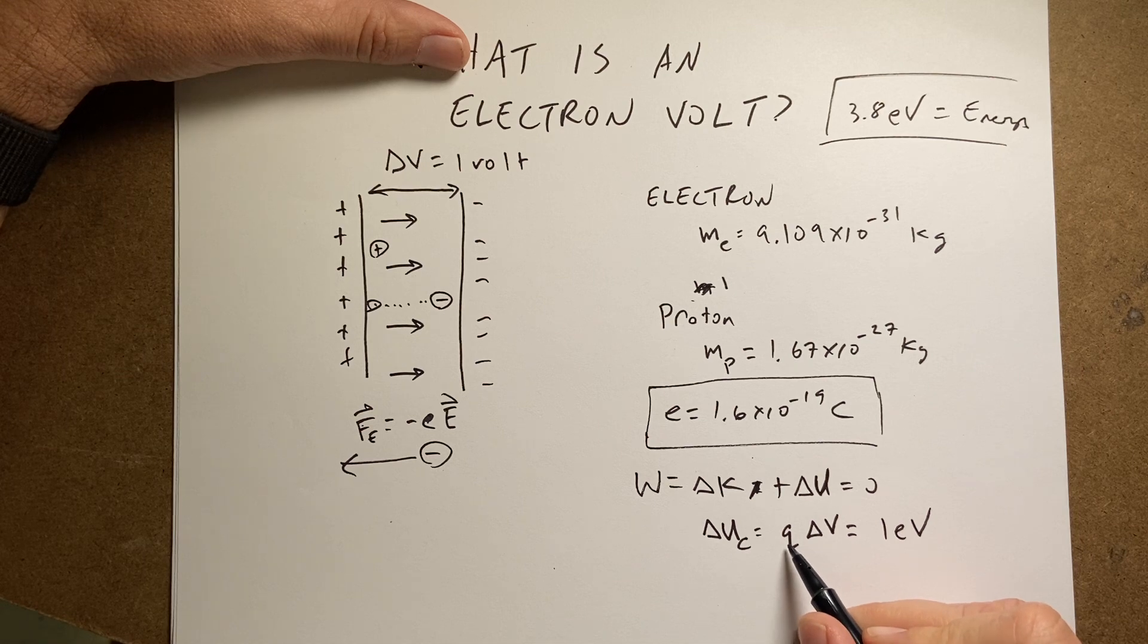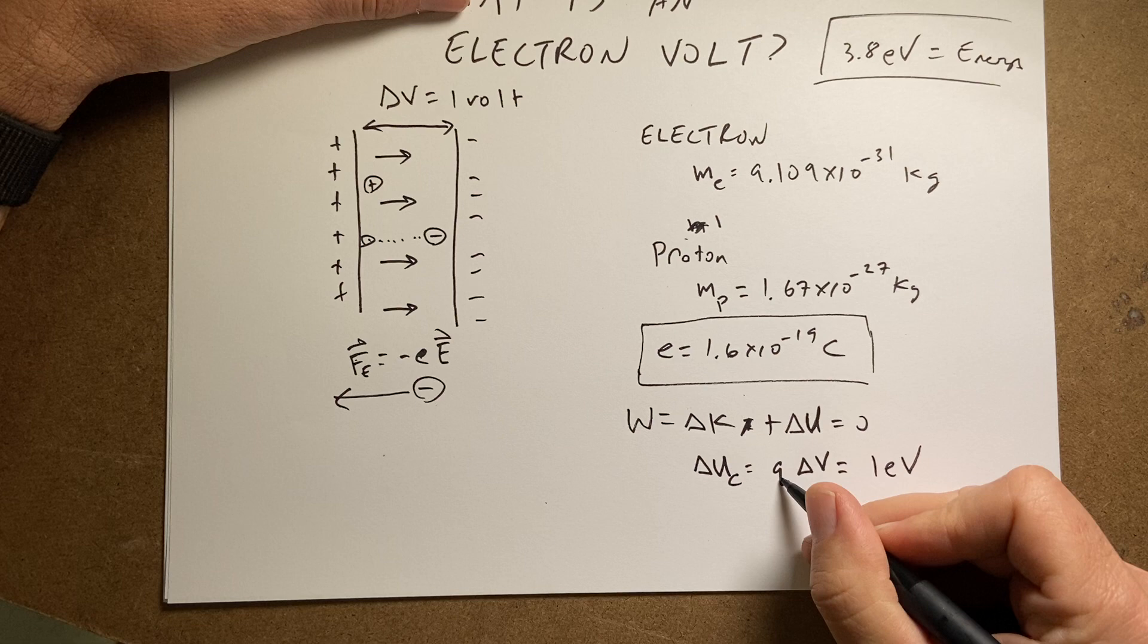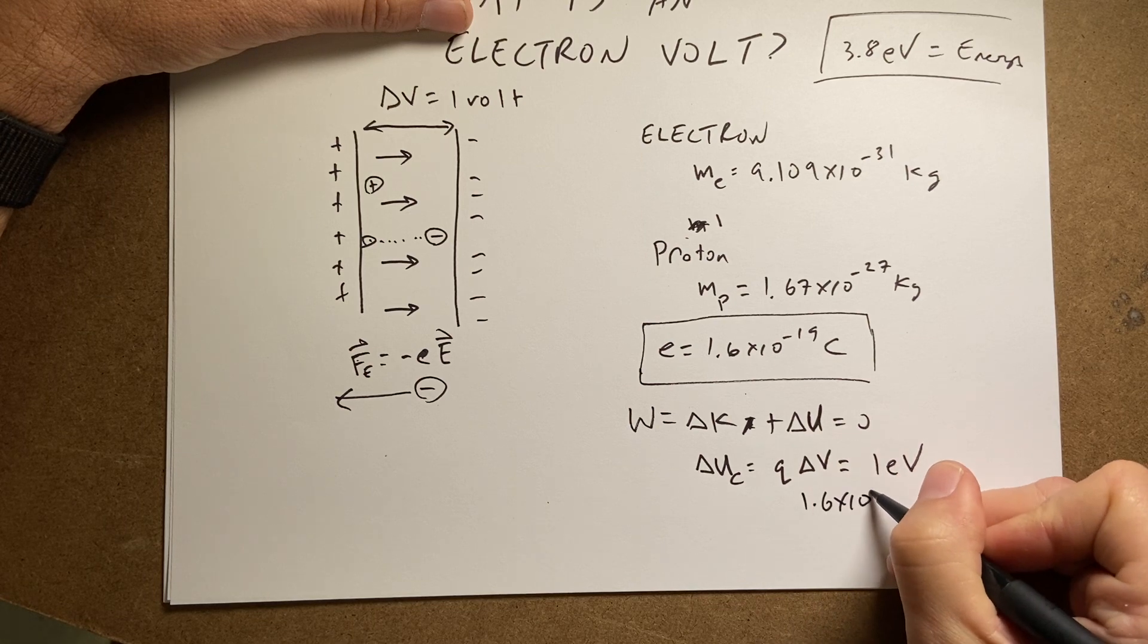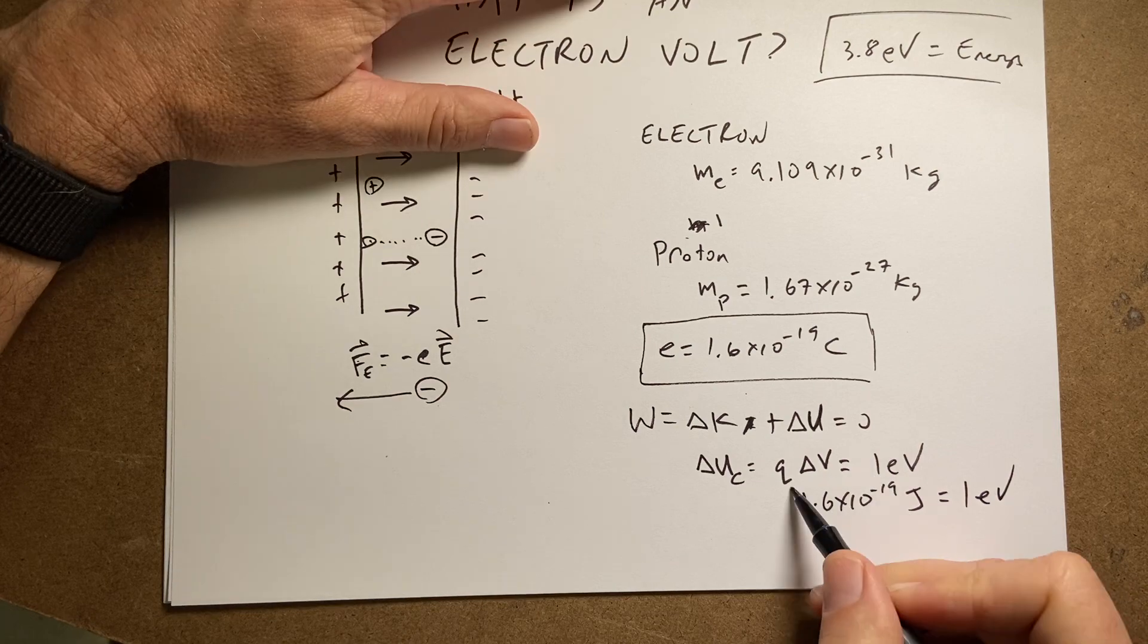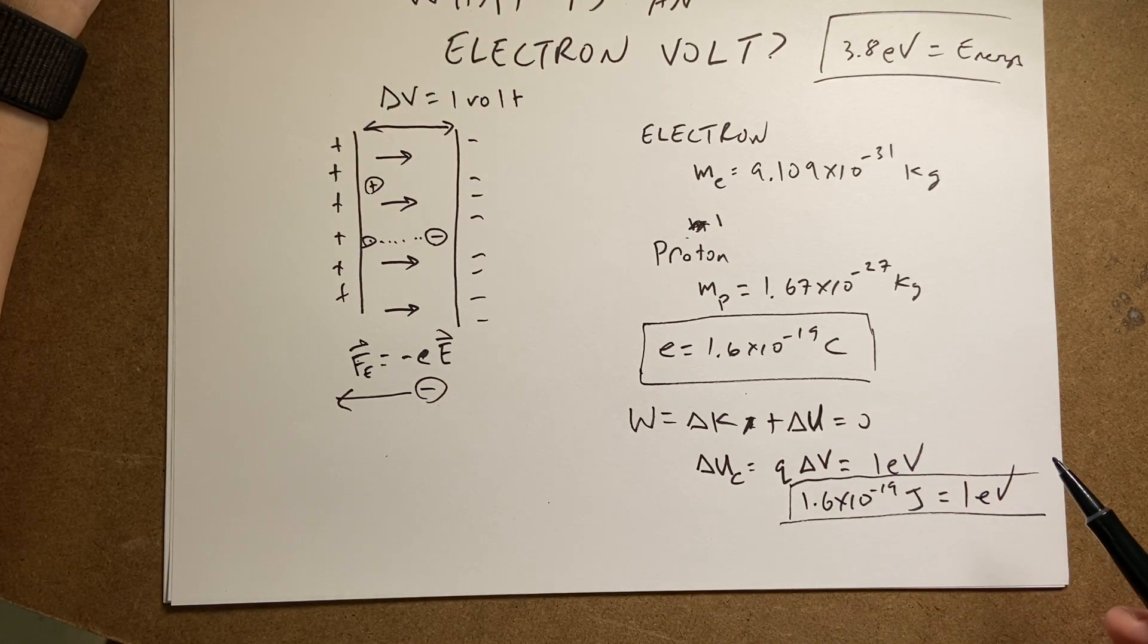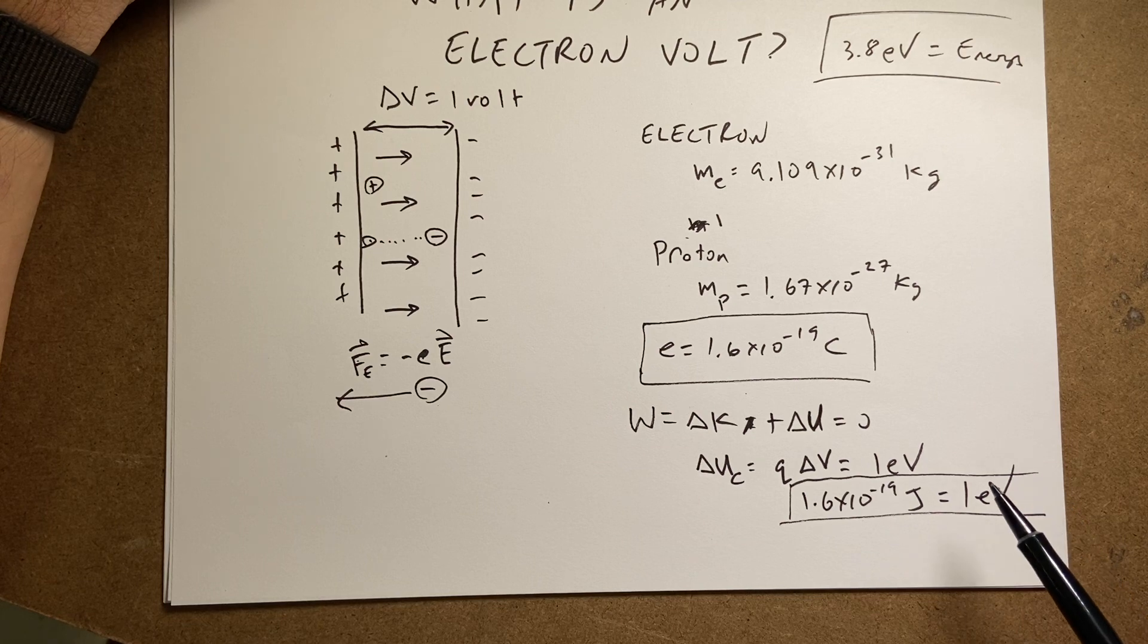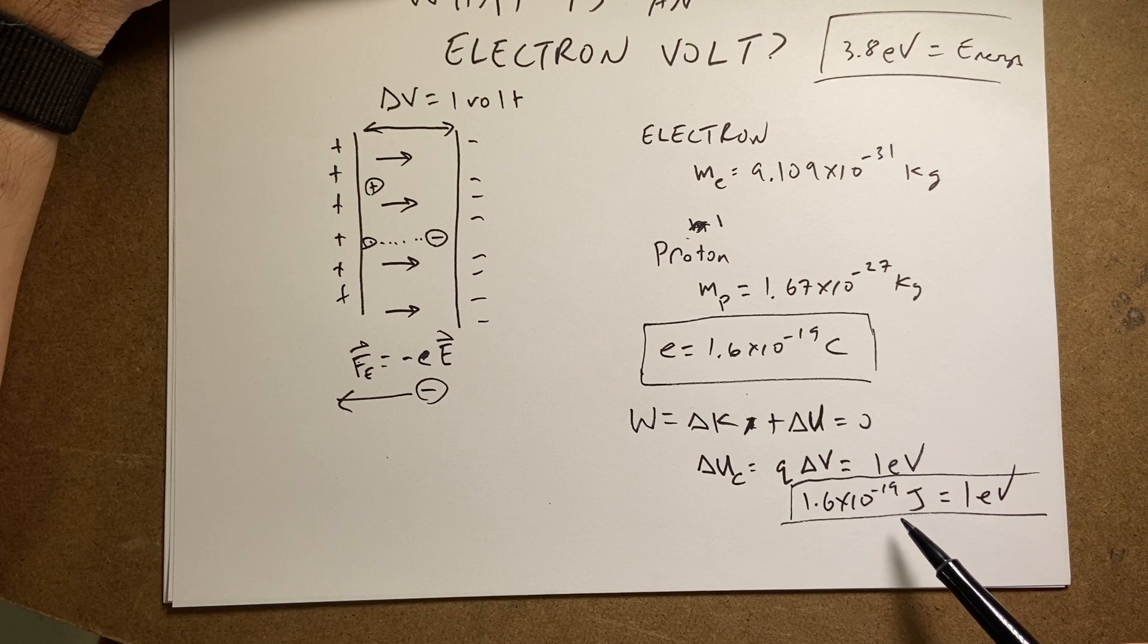But if I use this in units of coulombs and volts, I get the charge 1.6 times 10 to the negative 19th times 1 volt. So this is going to be 1.6 times 10 to the negative 19th joules equals 1 eV. So it sounds like it's a potential, but it's not. It's an energy. It's the energy one electron gets by going through one volt of change in potential. And so it has a, in joules, it'd be 1.6 times 10 to the negative 19th joules.